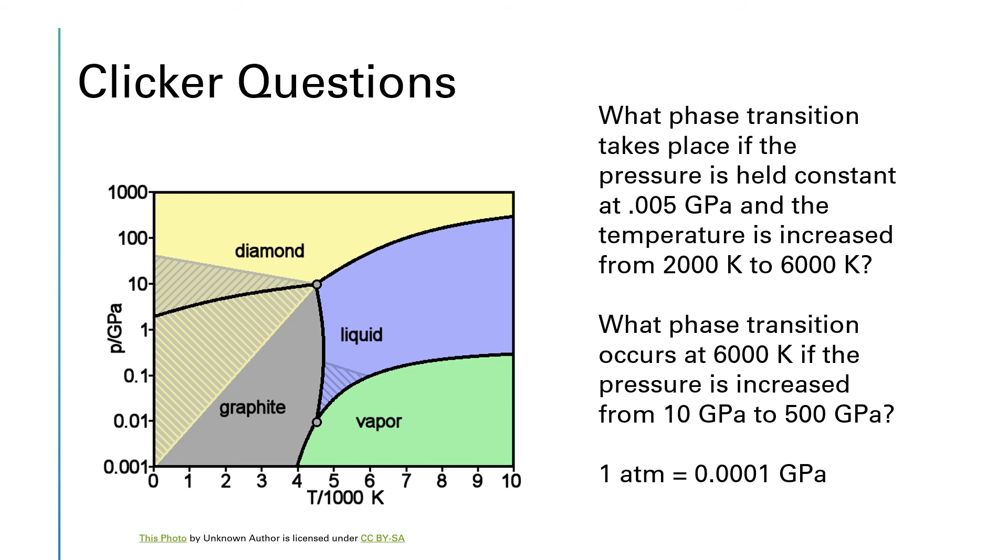Okay, I'm guessing that some of y'all got stuck back here at gigapascals because that's kind of a weird pressure unit. So just for a frame of reference, one atmosphere is 0.0001 gigapascals. So a gigapascal is a really, really big pressure unit. Even 0.005 gigapascals is a very high pressure.